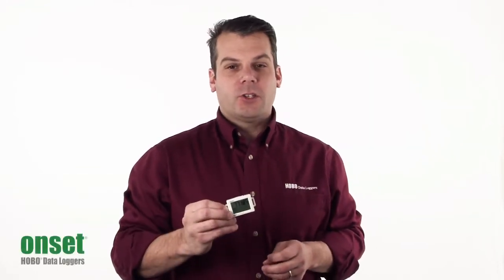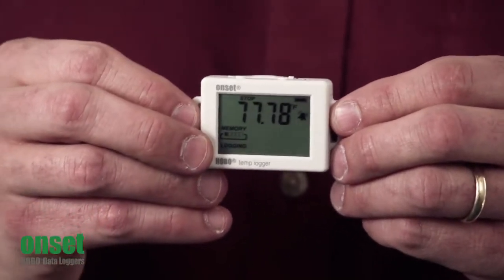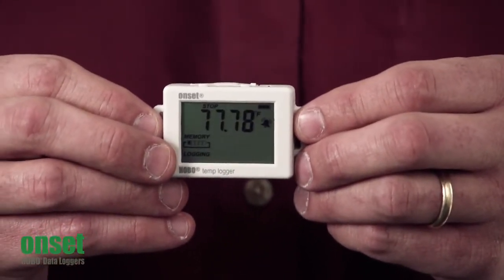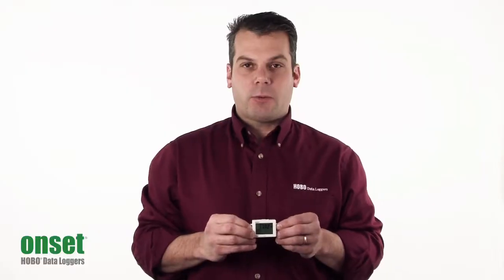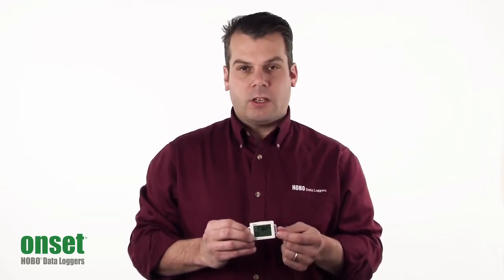and today we're going to take a look at the UX100 HoboTemp. This is part number UX100-001. It has an accuracy of plus or minus 0.4 degrees Fahrenheit or 0.2 degrees centigrade, and it has the capability of storing 84,000 measurements. Some of the key features include the LCD.